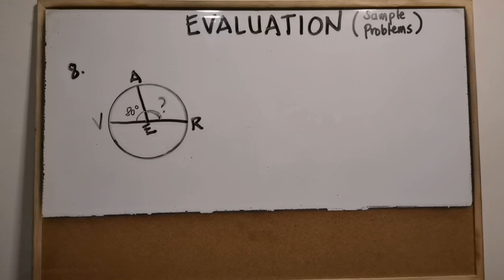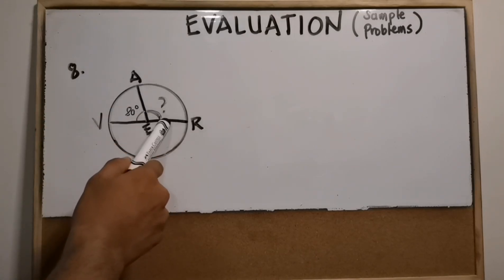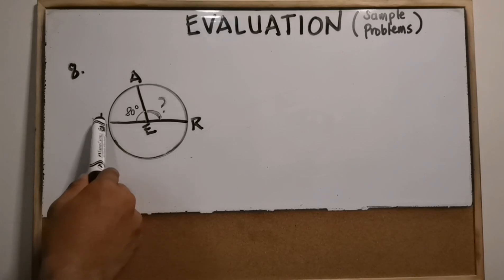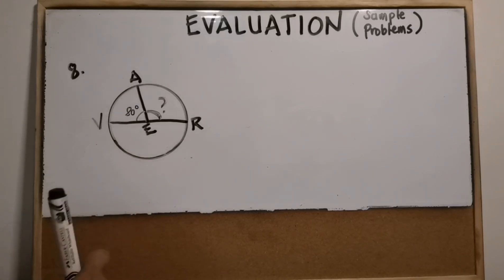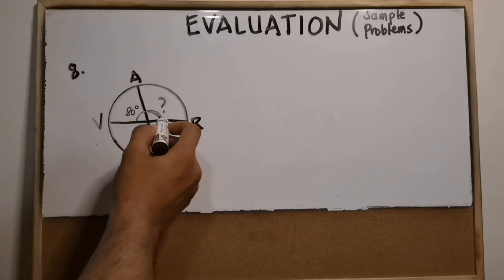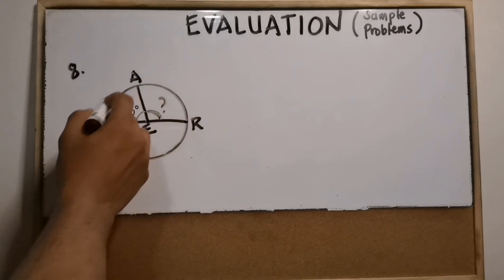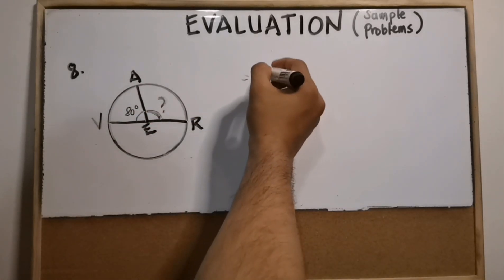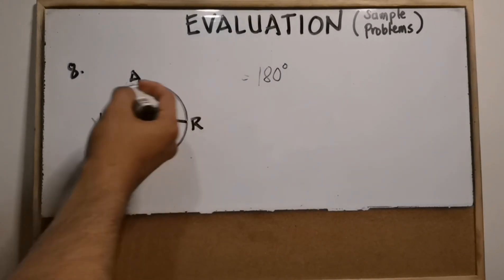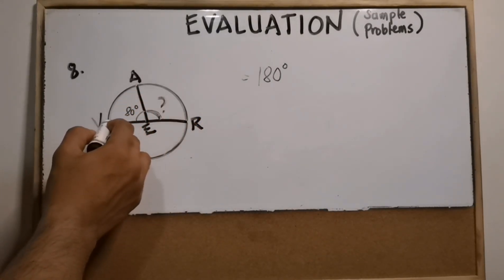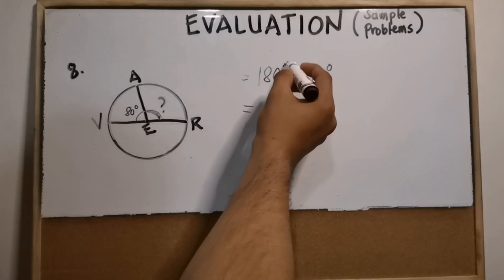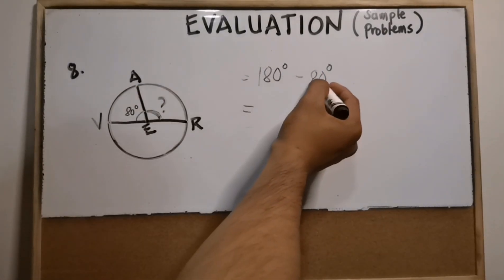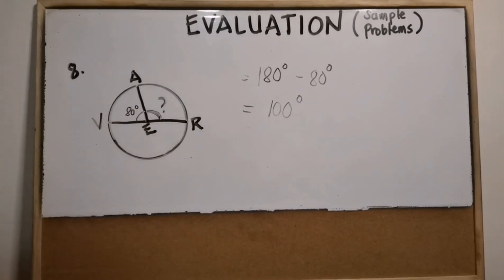Number eight: in the circle given, what is the measure of angle AER if arc VAR is a semicircle and the measure of angle VEA is 80 degrees? A semicircle measures 180 degrees. Since one part measures 80 degrees, we subtract: 180 degrees minus 80 degrees equals 100 degrees. So the measure of angle AER is 100 degrees.